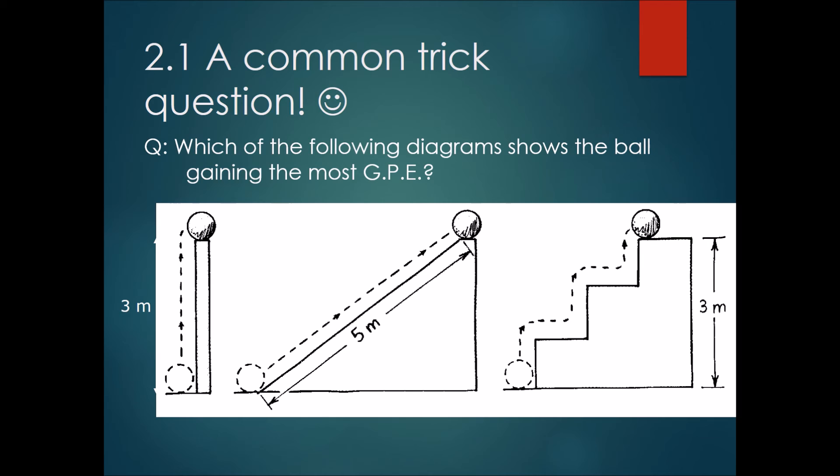Okay, have you gotten your answer? If you had picked any one of these, you would have gotten it wrong. Because GPE is based on mass, gravity, and height. All these masses are the same, and all these heights are also the same. All of them are actually three meters from the ground. So this shows that no matter what pathway the ball takes to get to whatever height, as long as it's on the same height and maintains the same mass, the ball will gain the same amount of GPE in every situation.